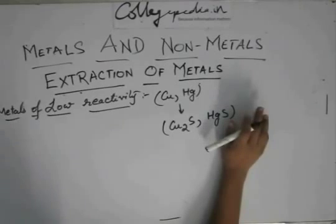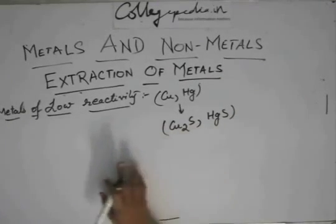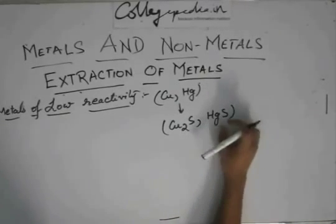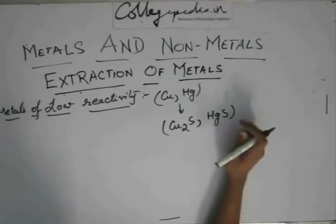Both are sulphides, their ores are sulphides. These are very weak sulphides. Just by heating, you can get the oxide.